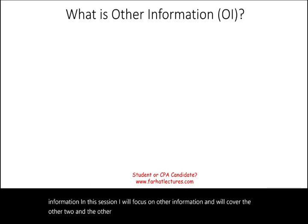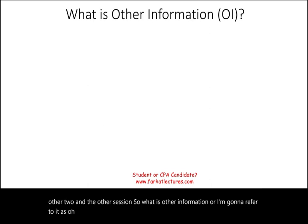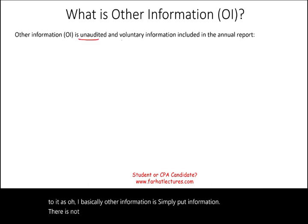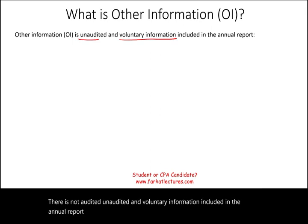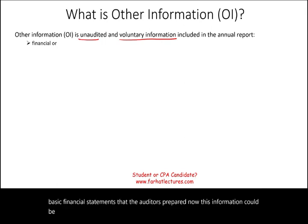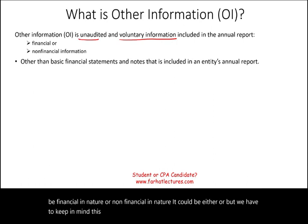So what is other information, or OI? Basically, other information is simply unaudited and voluntary information included in the annual report, or information that accompanies the financial statements — the basic financial statements that the auditors prepared. This information could be financial in nature or non-financial in nature. We have to keep in mind this information does not include, and is other than, the basic financial statements.